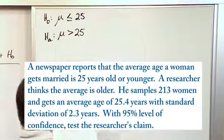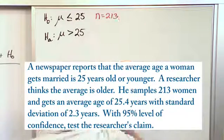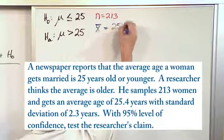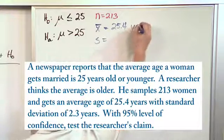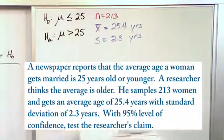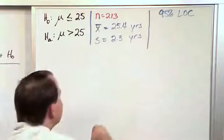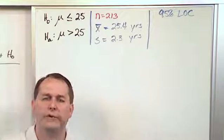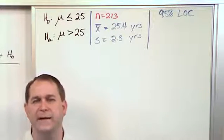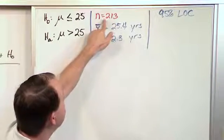Let's write down all of the information. He samples 213 people. When he gets the data back, the average age of the people in his sample who got married is 25.4 years old. The standard deviation is 2.3 years. It also tells us to test this claim at a 95% level of confidence. This is literally all of the information we're given. You won't be told whether to use large or small samples, normal distribution, or t-distribution — you need to figure that out for yourself. The first thing to do is write down our hypothesis, the null and the alternate, and note the number of samples.